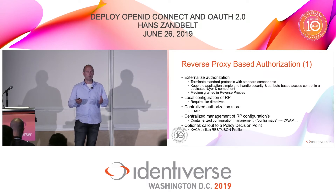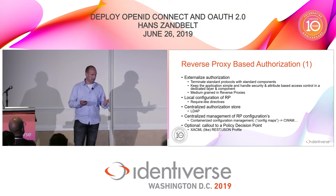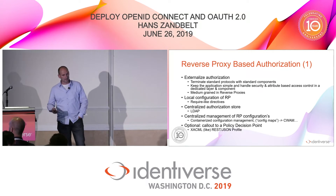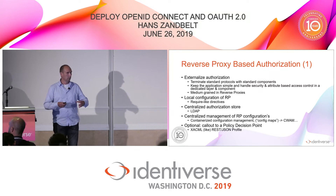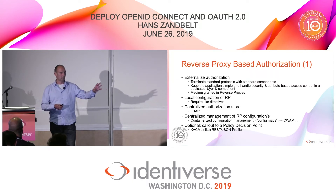For example, for those familiar with Apache, it would be require-like directives — like 'require claim user equals hans'. You can also pull information about the user or authorization information from a local store, like an LDAP directory that sits next to your application holding local application-related user information. You can consult that on the fly from the reverse proxy and externalize more and more outside of your service. Centralized management of the configuration — you can use your container configuration, whatever they call it these days, config maps or whatever, to create the configuration for the reverse proxy, push it out to your containerized environment, instantiate the reverse proxy service, and effectively realize centralized or delegated access management.